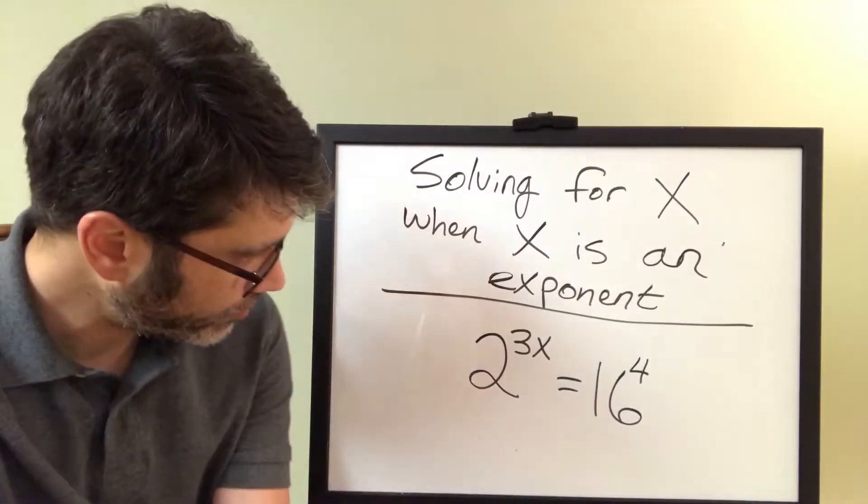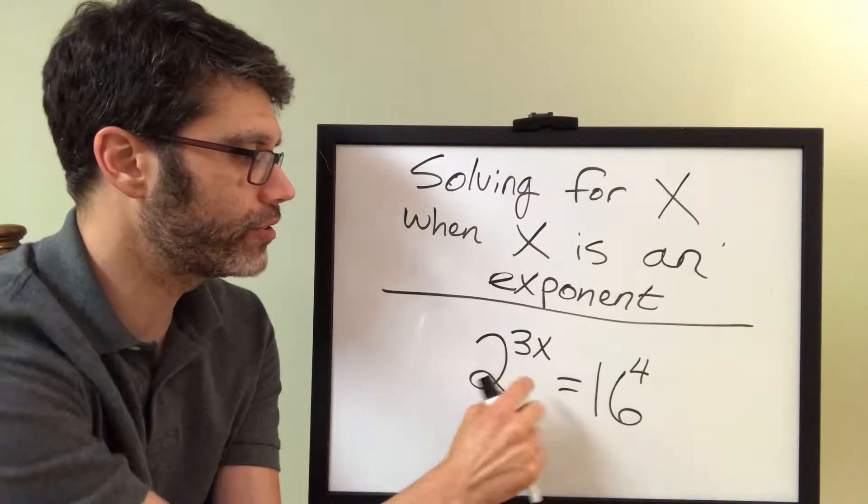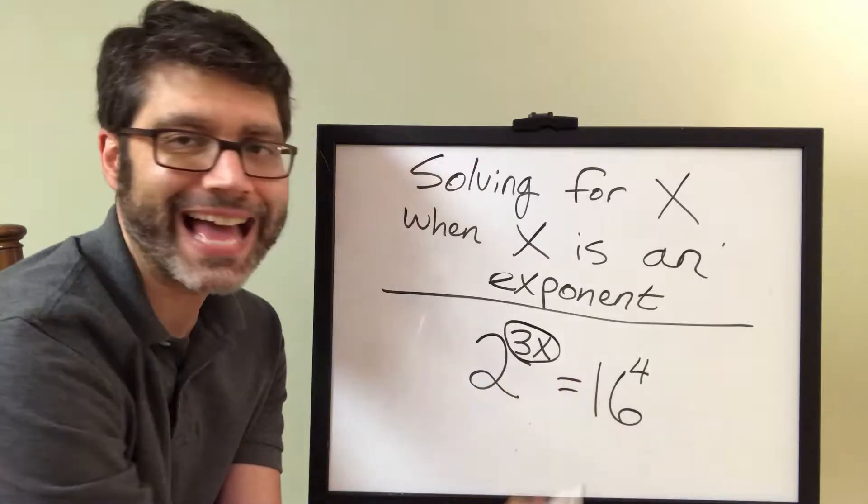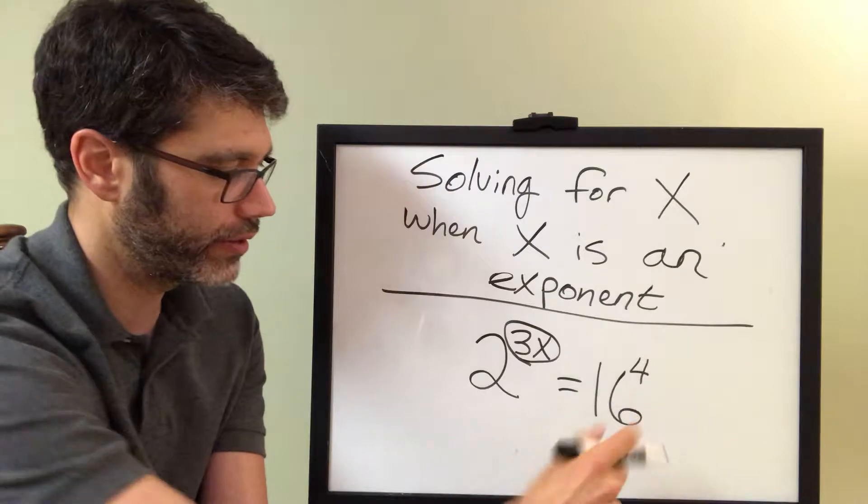All right, here's another example. We have 2 to the 3x, so I am considering this entire exponent to be 3x, the quantity 3x. So 2 to the 3x equals 16 to the 4th.